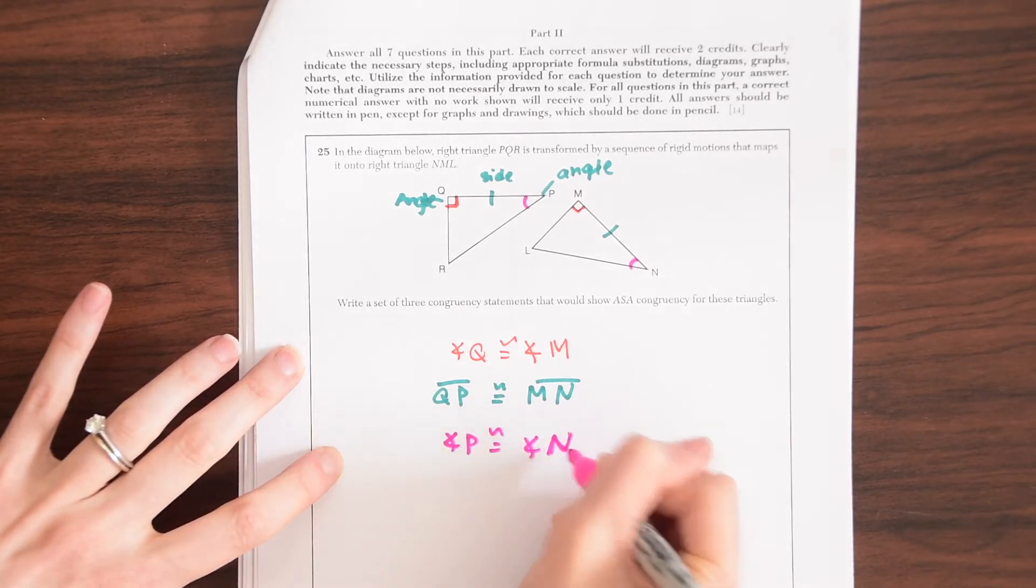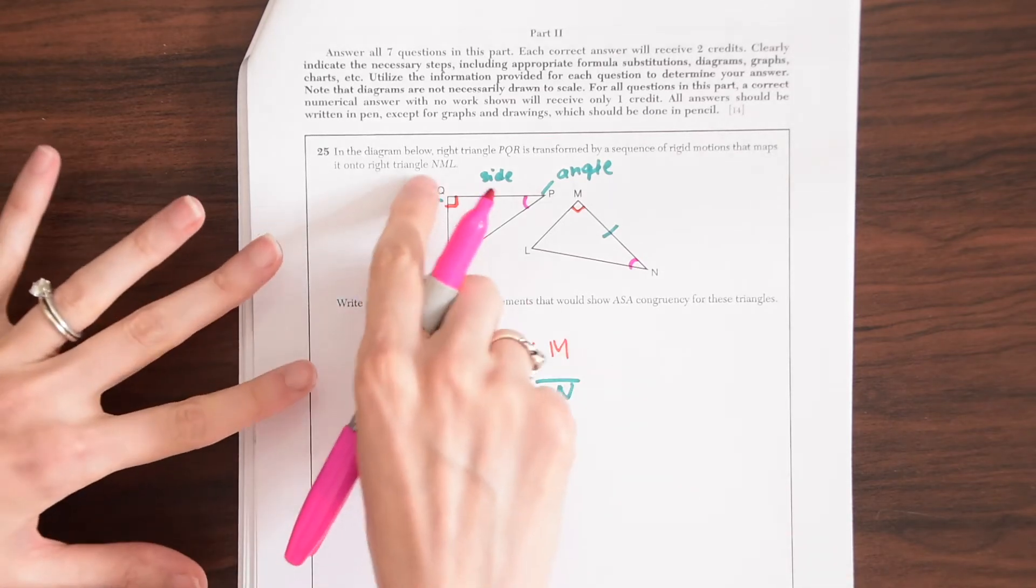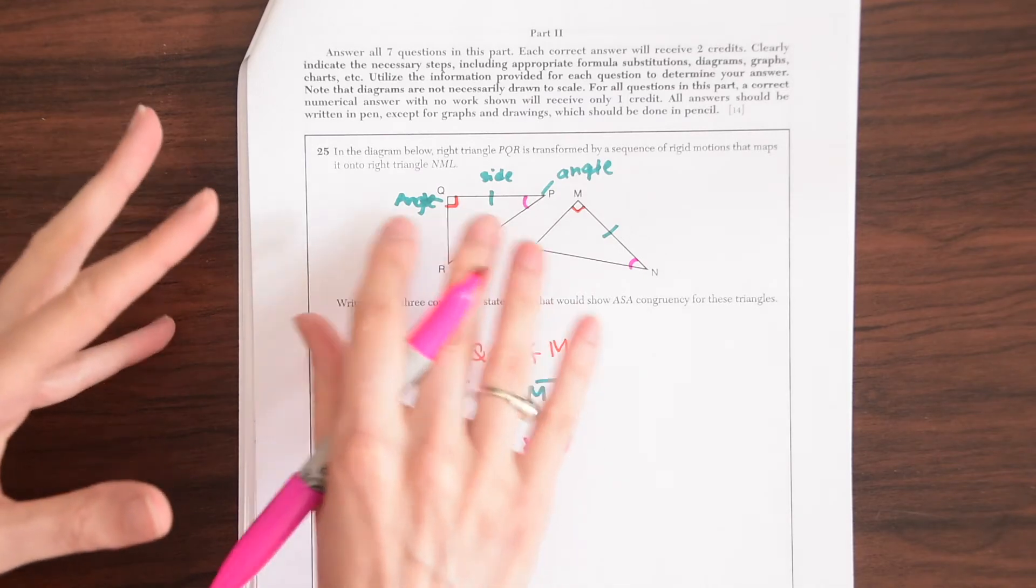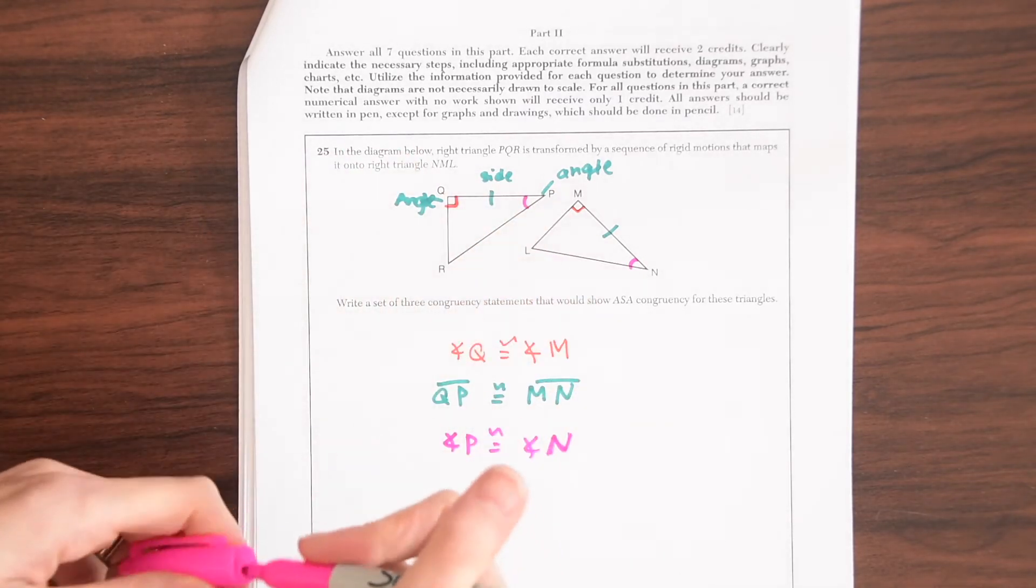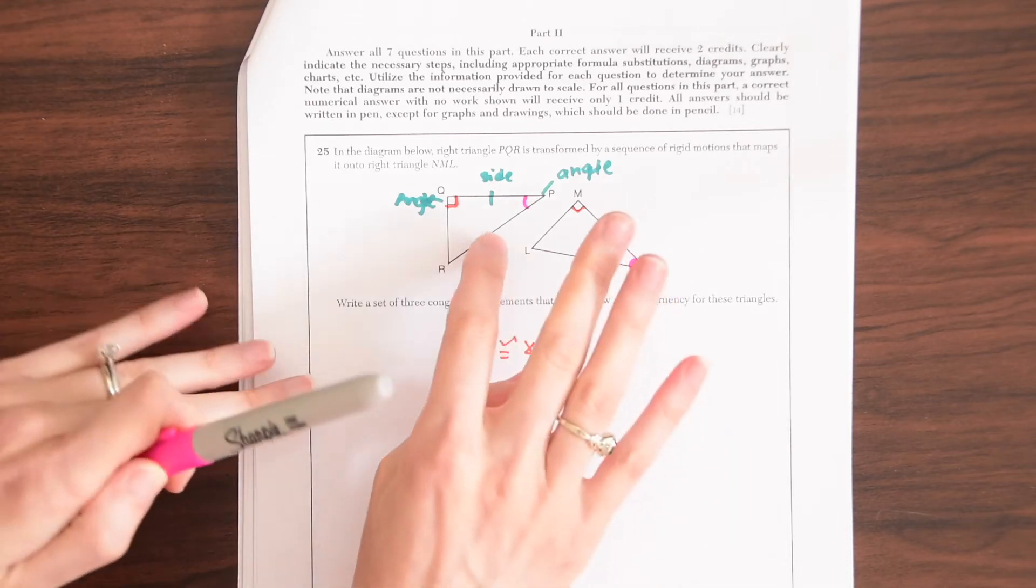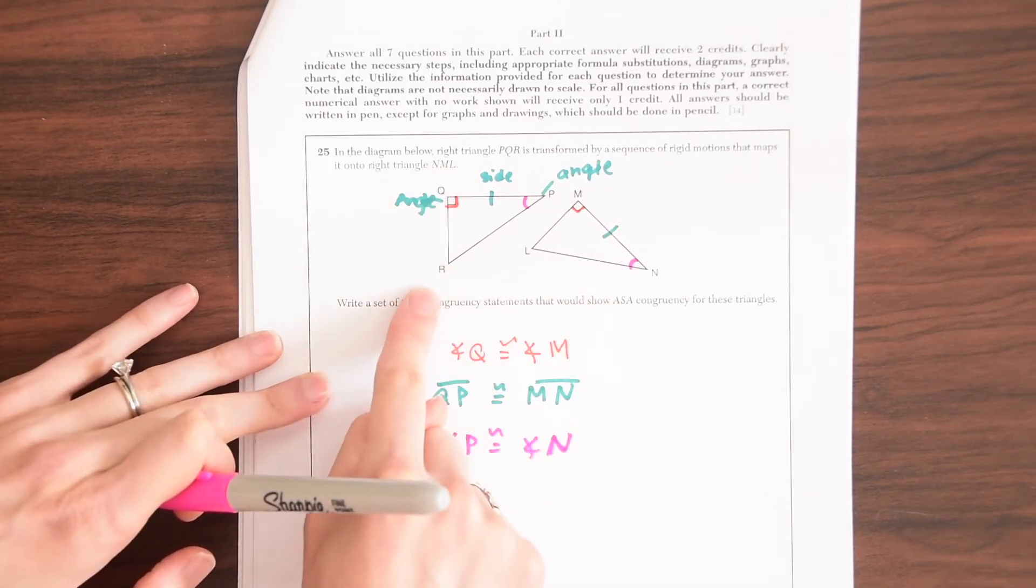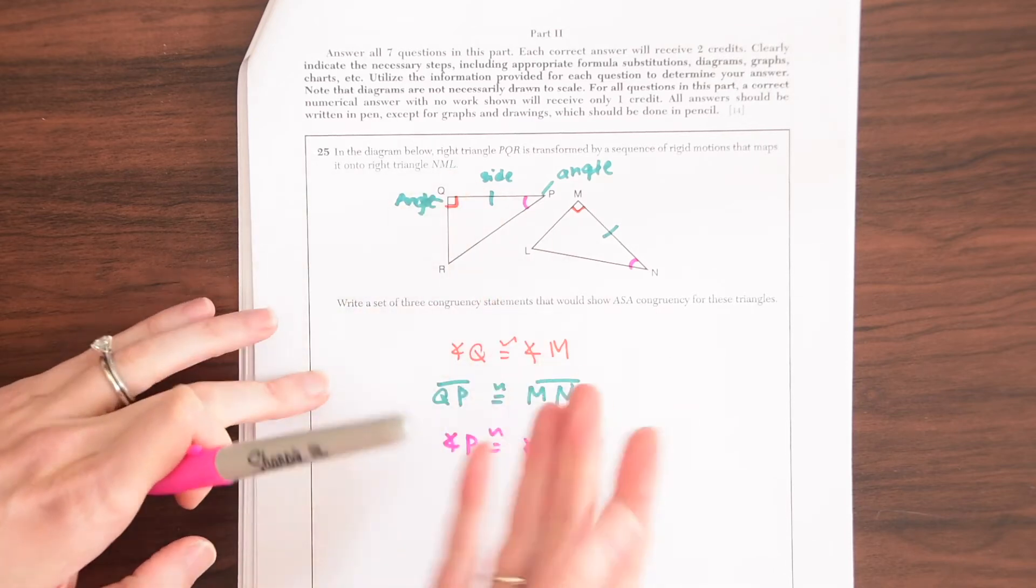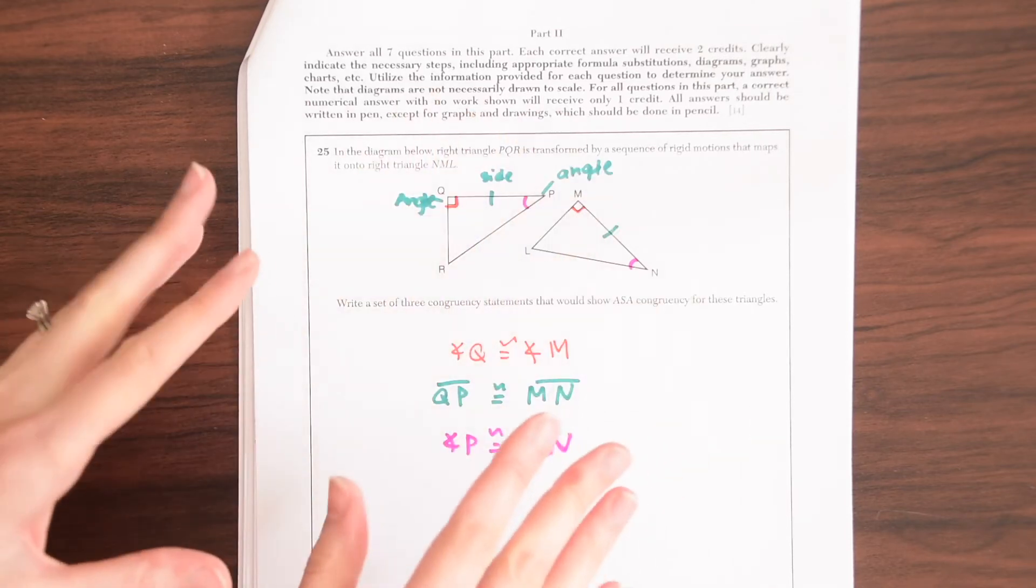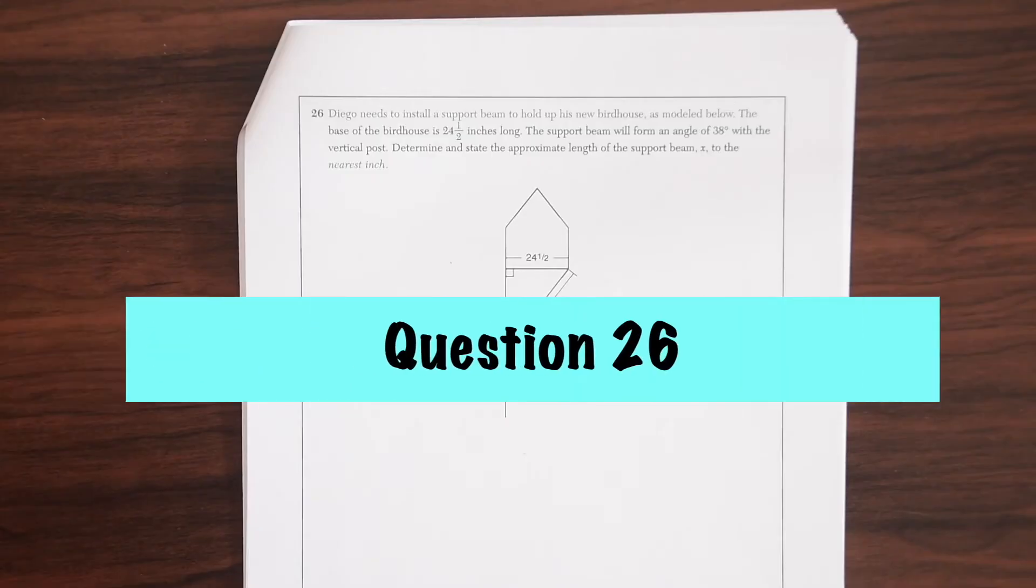So it's really that easy as long as you know what ASA means, angle-side-angle, you should be able to identify something that appears like this on the triangle. And you could have done this a different way. You could have said angle R and then side QR and then angle Q. As long as you go in that order, congruency statements of angle-side-angle. On to question 26.